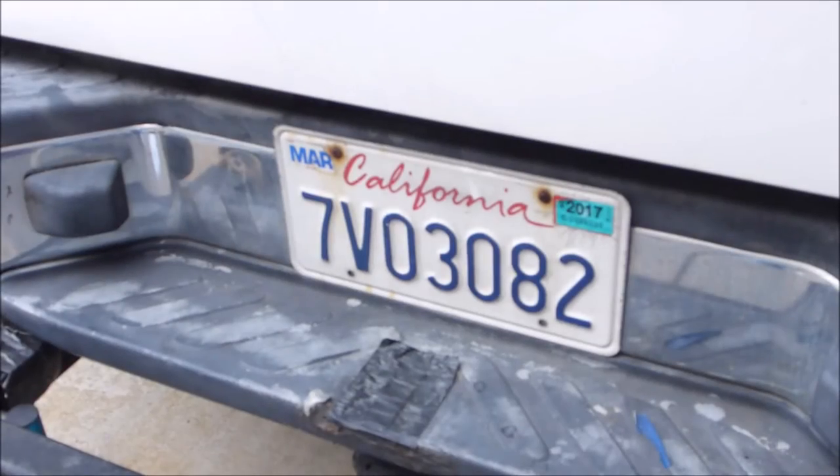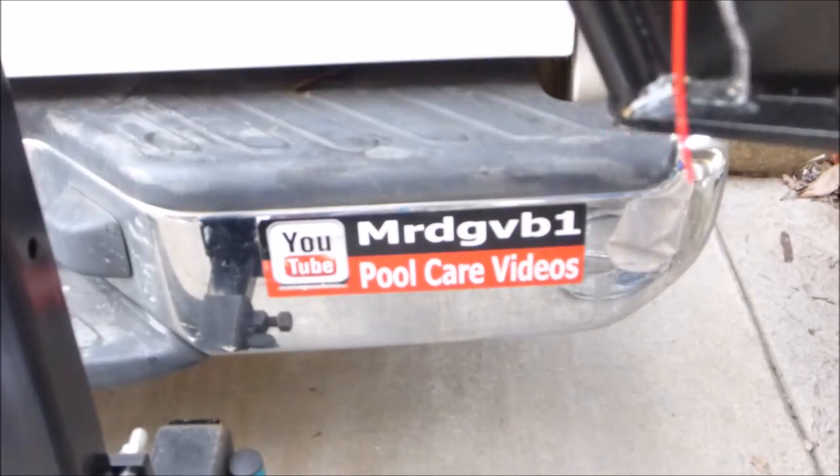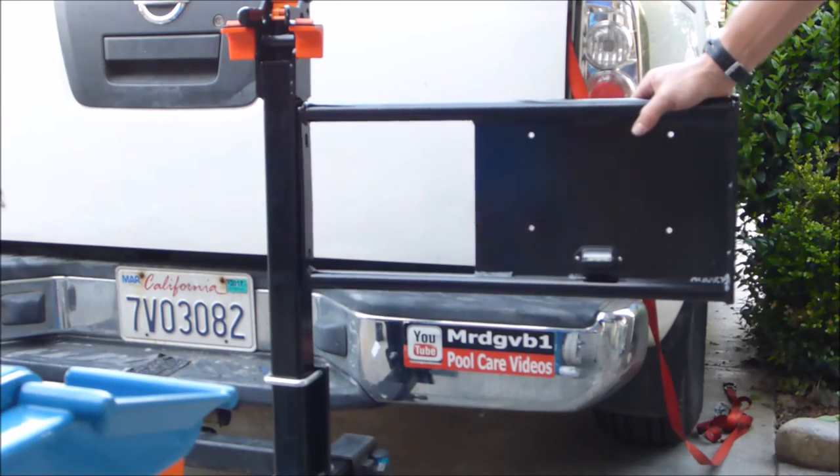If you're mounting the Riptide to the center of your truck, you can move the license plate. It comes with this lighted license plate holder. You just have to wire it in and you would simply attach it to either side of the transport rack.